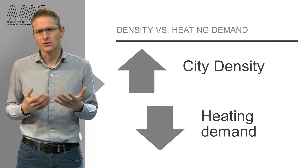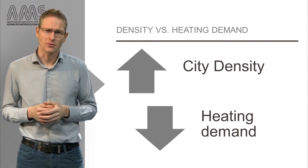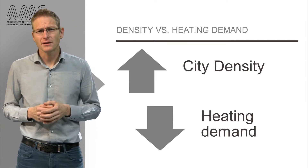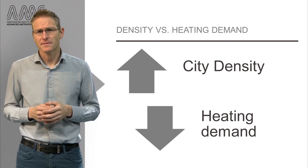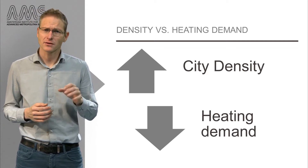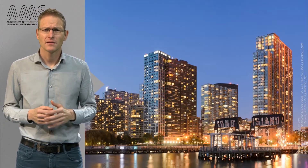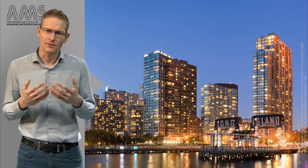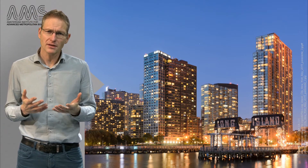Density is a good explanatory variable for this. Take the example of heating of buildings. As density goes up, the heating demand goes down. This can be explained by the fact that walls are shared and the relationship between the volume of the building and the outer surface area decreases.